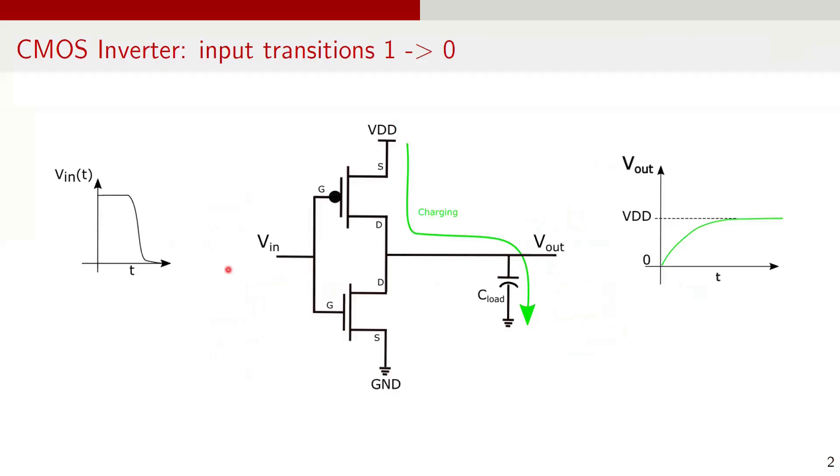To find the answer, first let's understand how a standard CMOS inverter works. In a typical inverter circuit, we have one NMOS and one PMOS transistor. The gates of both transistors are connected to input signal VIN and the drains are connected together to form the output node Vout. The source of the PMOS is connected to VDD and the source of the NMOS is connected to ground.